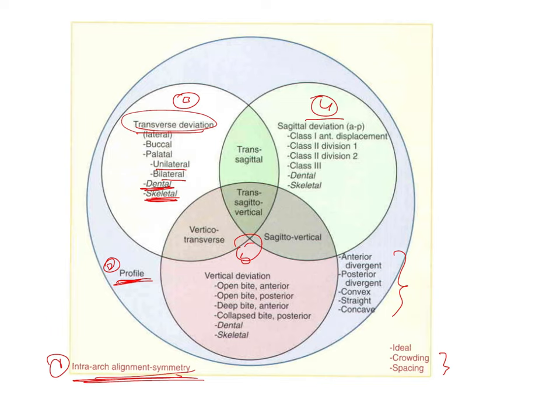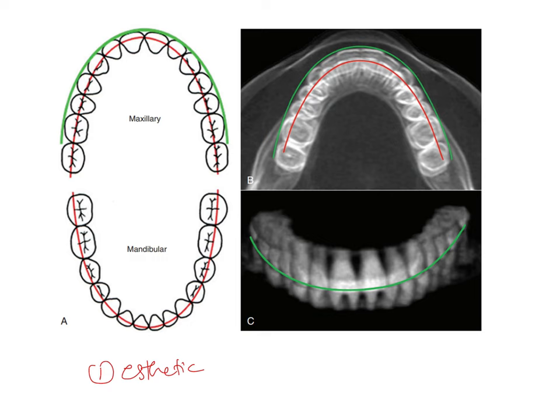Apart from the five characteristics, Ackermann and Proffitt added two more features to better evaluate malocclusion. The first was the aesthetic line of dentition. This is similar to Angle's functional line of occlusion. In the image shown, the red line represents Angle's functional line of occlusion and the green line represents the aesthetic line of dentition.